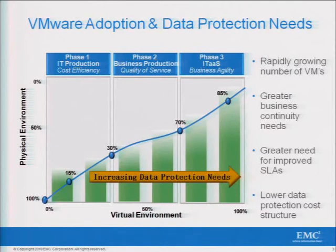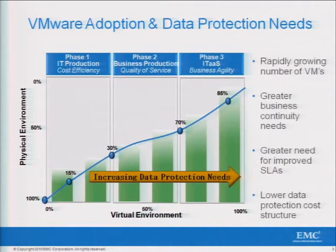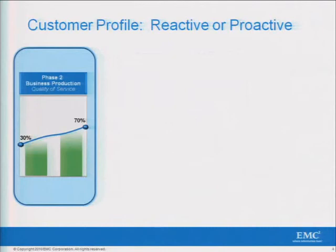What's also interesting along this timeline is there's a parallel in terms of the type of infrastructure you're likely using to protect that environment. Organizations just getting started with virtualization are probably very reliant on tape-based infrastructure or legacy infrastructures for data protection. As you move across, in order to really capitalize on virtualization, you need to leverage next-generation data protection technologies. Not thinking about data protection can actually cause organizations to essentially hit a wall when going through this process.